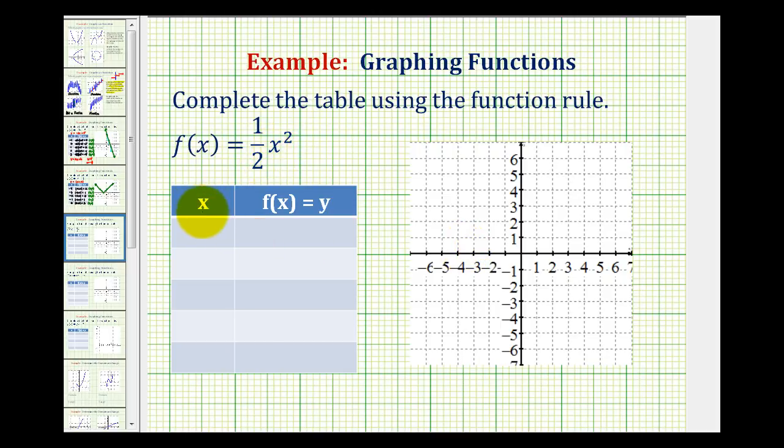So we can select any x value that we want, but notice how whatever x value we select, we are going to have to square it and then multiply by one half. So let's go ahead and put x equals zero in the middle of the table. And then we'll select values that are less than zero here and greater than zero here. So let's select negative two and negative three, and positive two and positive three.